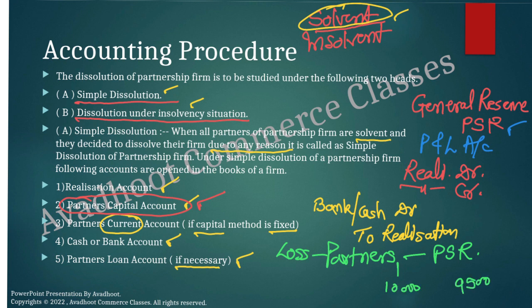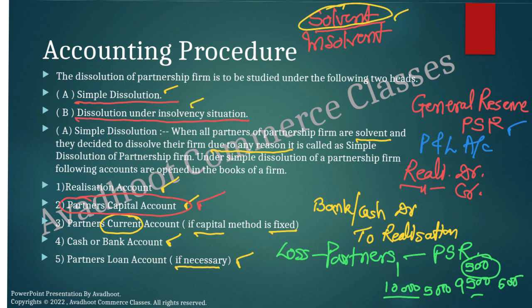After transferring the realization loss, close the partner's capital account. Suppose partner A's debit side is 10,000 and credit side total comes to 9,500 — debit is greater than credit, meaning a deficiency of 500 rupees. Since all partners are solvent, it is assumed that the deficiency is brought in cash: cash or bank account debit to partner's capital account — Mr. A. If partner B's credit side is 6,000 and debit side is 5,000, excess capital of 1,000 is paid off: partner's capital account debit to cash or bank account.